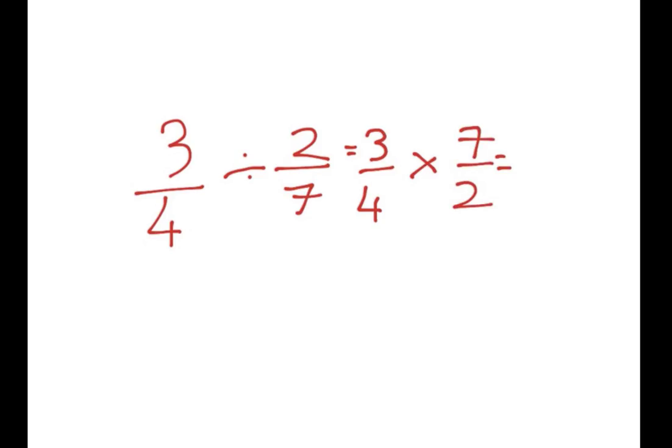And now we end up with 3 times 7, which is 21. 4 times 2, which is 8. And the answer is 21 over 8. And that's it.